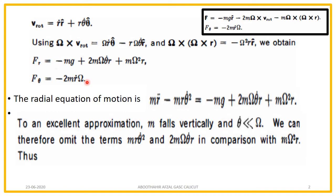As we know, the two coordinates which can change are r and theta. If I want to find the velocity, I should find the time derivative of each coordinate, that is r-dot and theta-dot. The velocity of the particle in vector form is given by V_rot equal to r-dot times r-cap, plus the component of velocity along the theta direction, r times theta-dot.